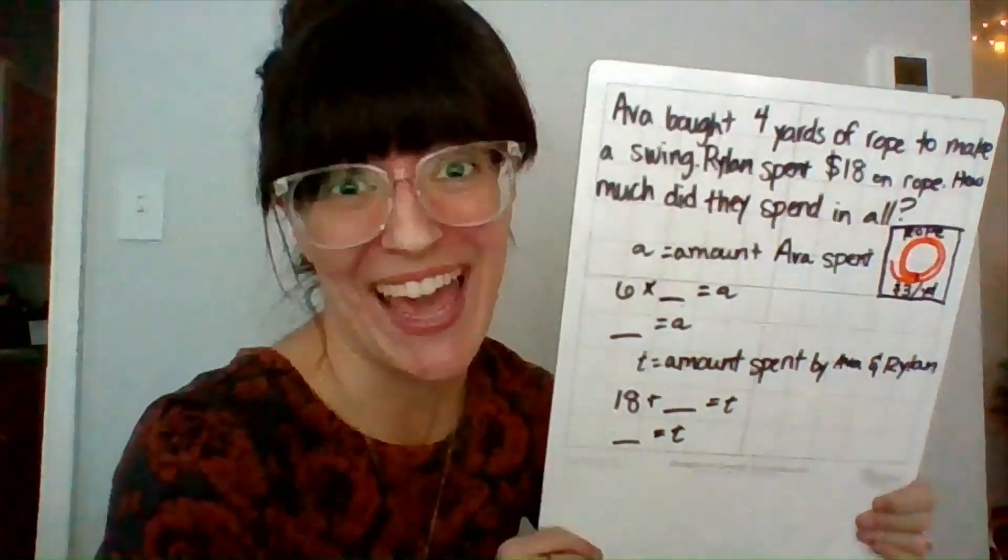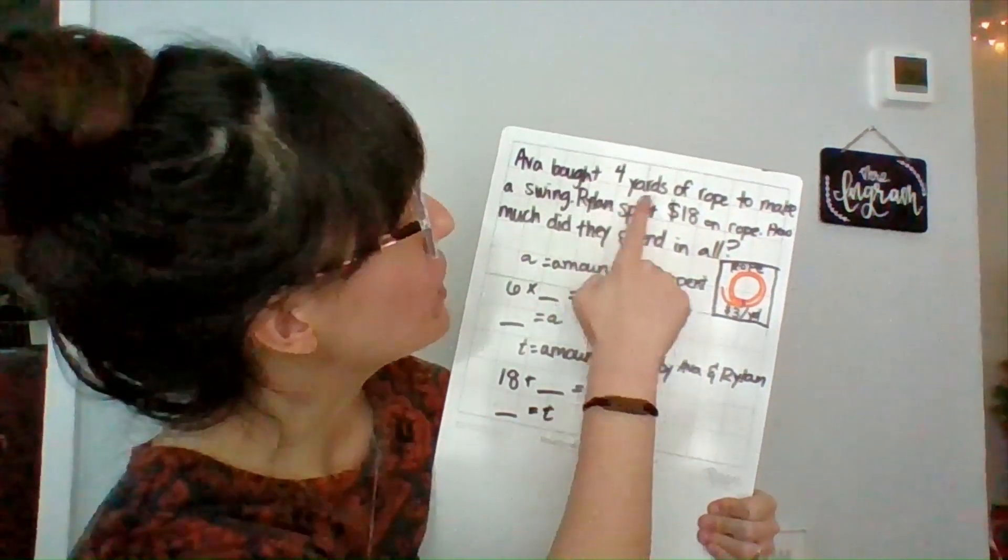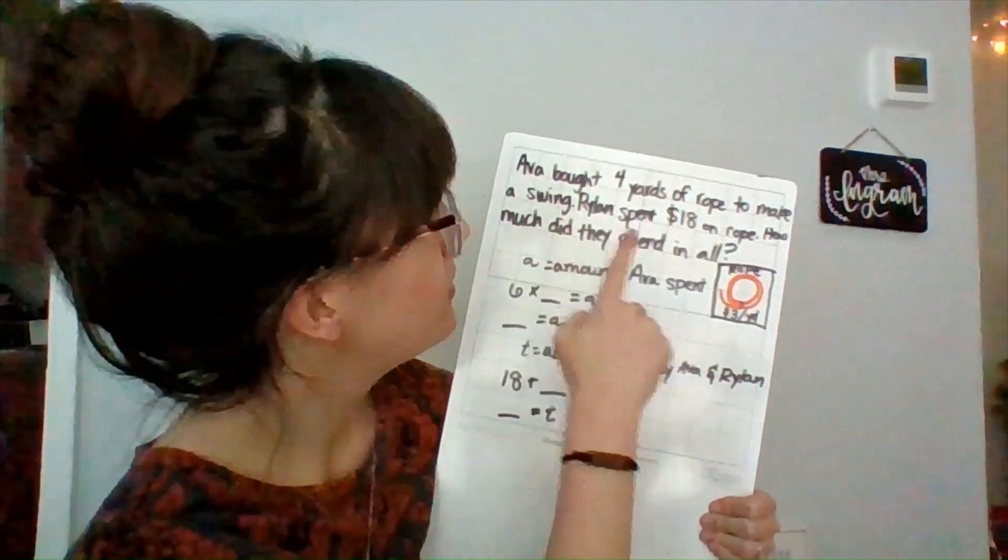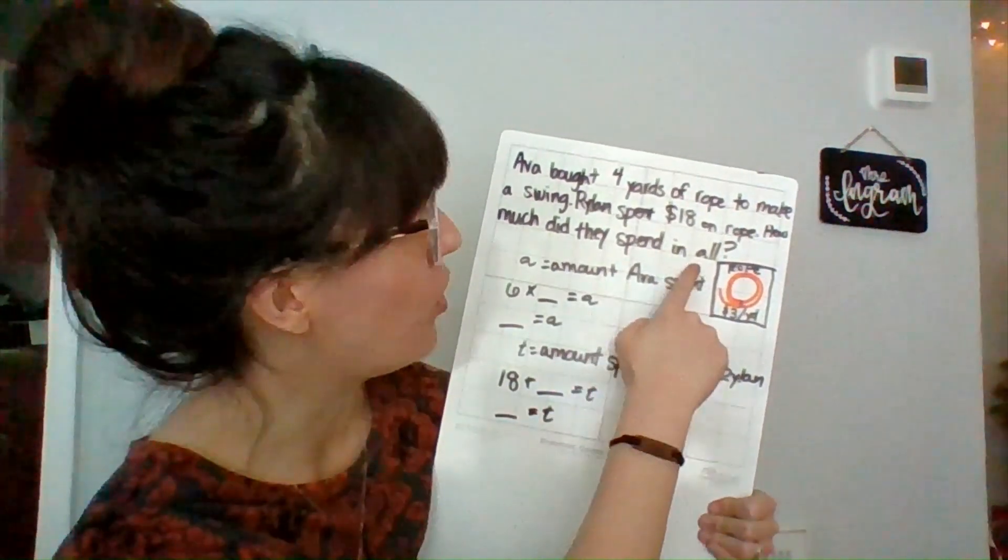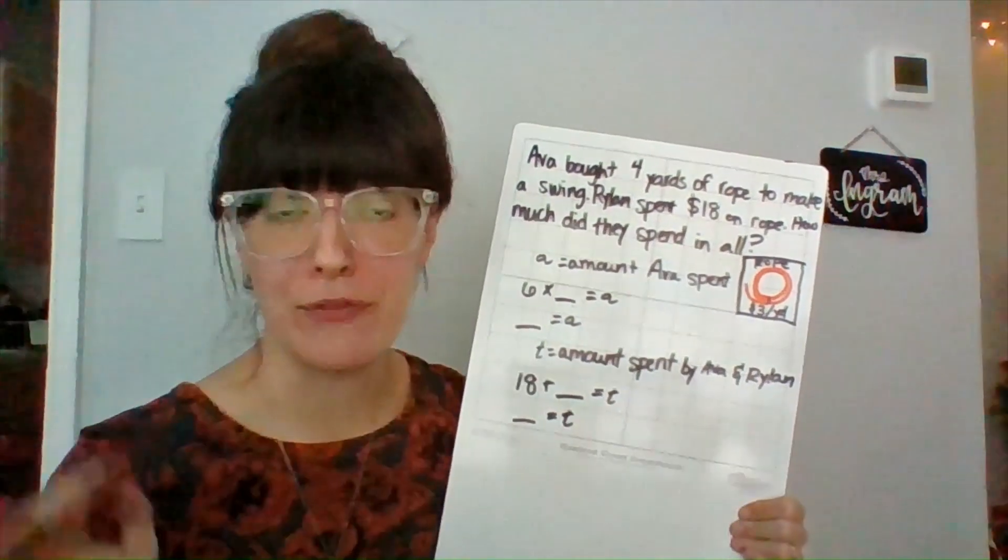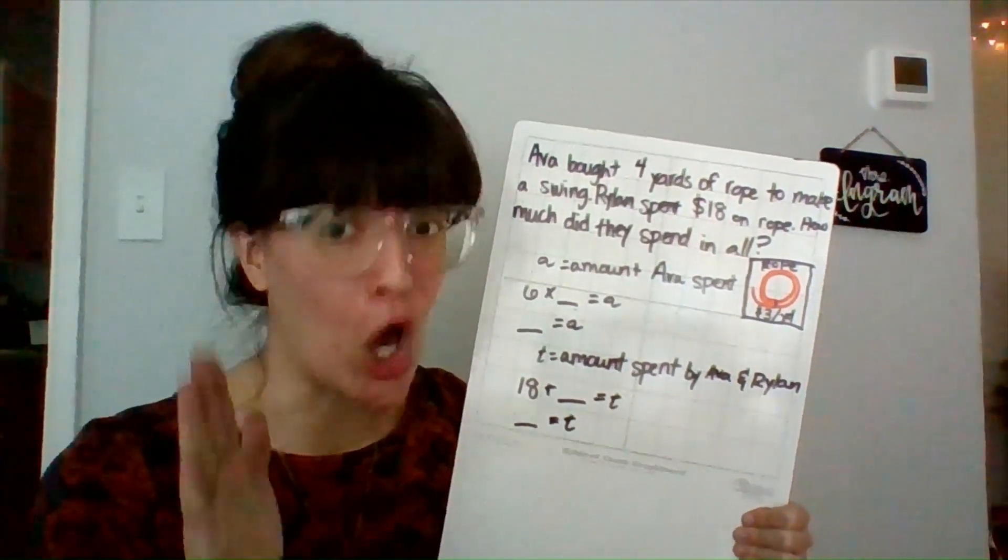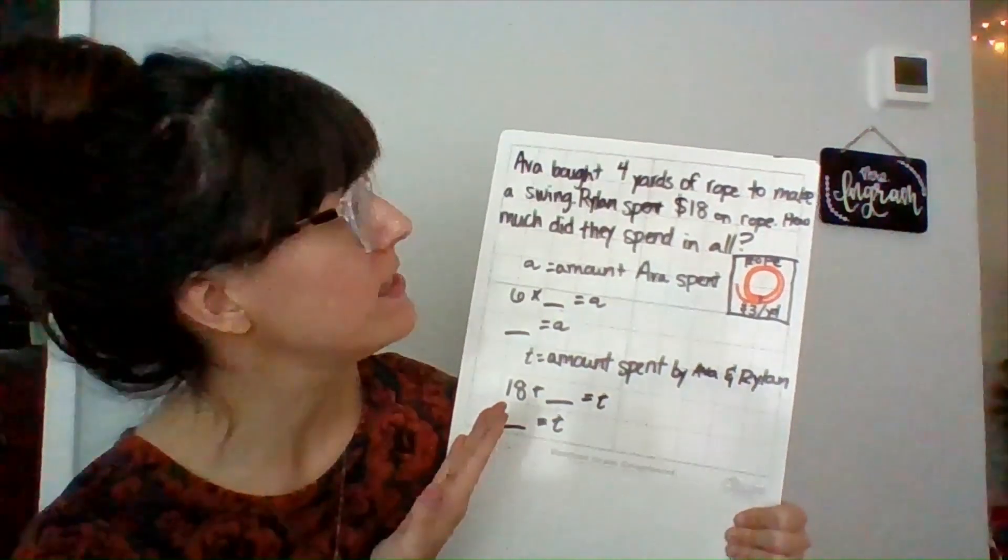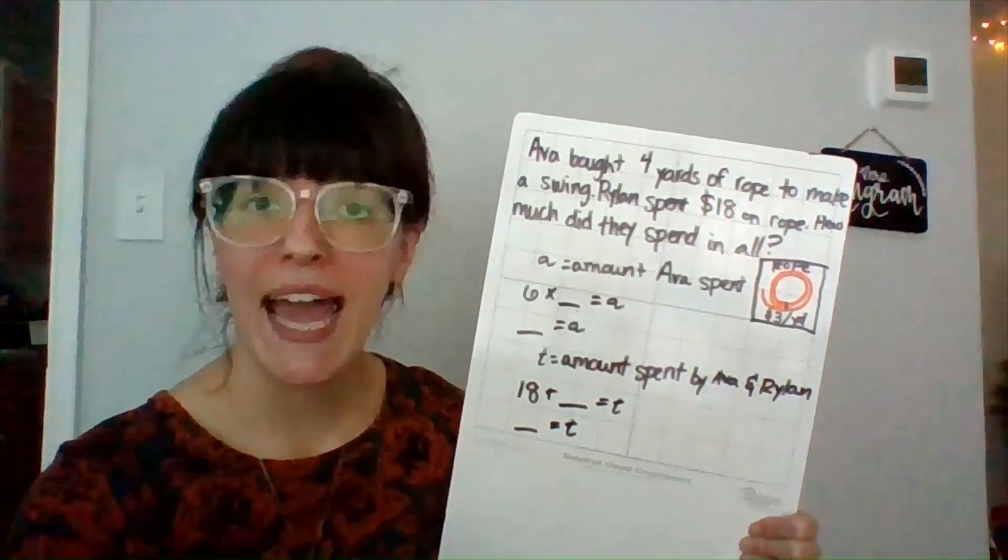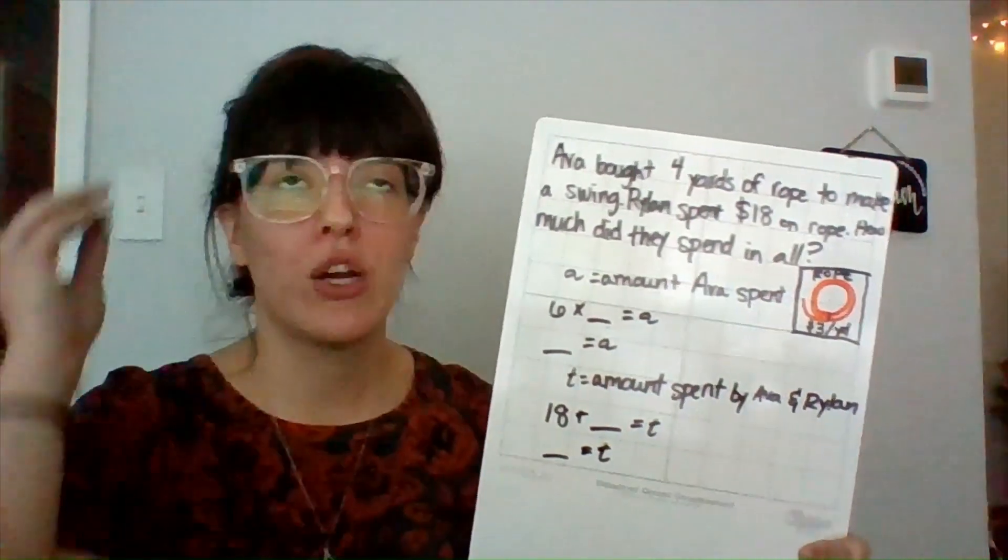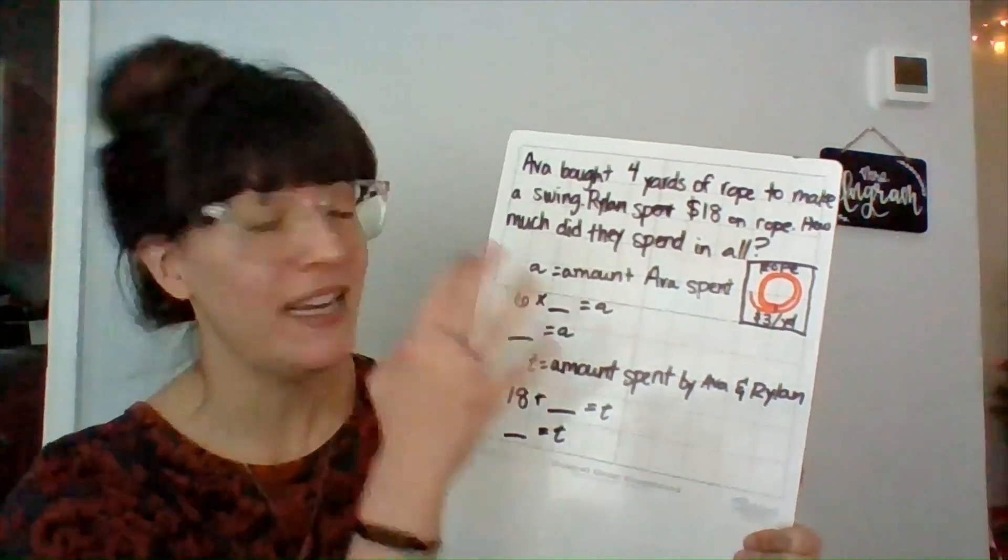All right, let's go ahead and look at our first problem. Ava bought four yards of rope to make a swing. Rylan spent $18 on rope. How much did they spend in all? All right, the first thing I'm going to do, I'm going to visualize this problem. I'm going to think about what are we even talking about. In this case, we're talking about Ava and Rylan making a swing and how much money they spent. So I'm going to be thinking about that, picturing that in my head as I solve it.